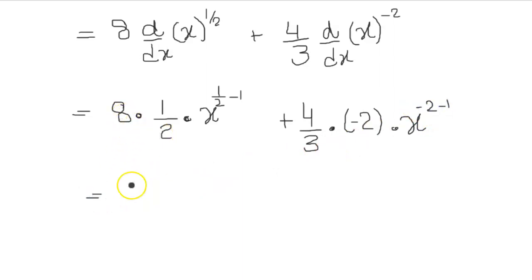So that will be 8 divided by 2, that's 4. I got the 4, and the x, half minus 1 is minus half. Plus 4 over 3. If I do 4 times minus 2, 4 times minus 2 is actually minus 8, minus 8 over 3. And that's x minus 2 minus 1 is minus 3. So this is your dy over dx.